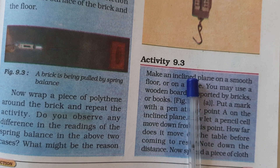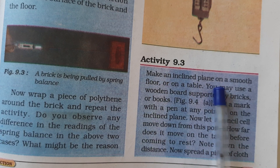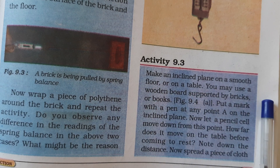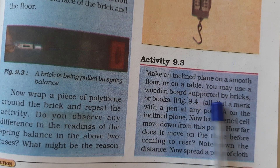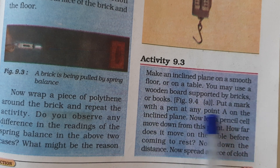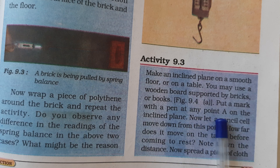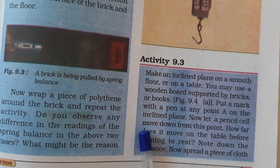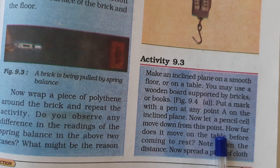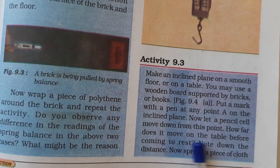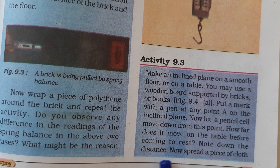Activity 9.3: Make an inclined plane on a smooth floor or on a table. You may use a wooden board supported by bricks or books. Put a mark with a pen at any point A on the inclined plane. Now let a pencil cell move down from this point. Note down how far it moves on the table before coming to rest.